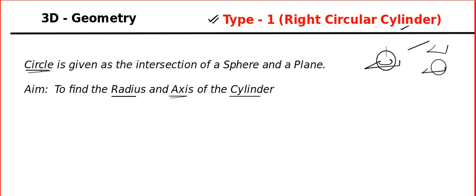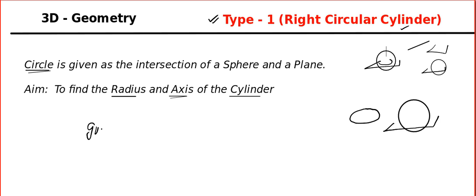Now look at this. Here, what they do is they will give you the guiding curve. And the guiding curve will be given as a circle because this is the right circular cylinder. The guiding curve will be given as the intersection of a plane and a sphere. The guiding curve of a right circular cylinder will be a circle.